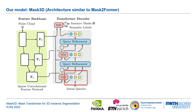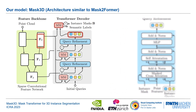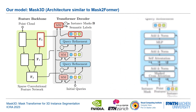To that end, the instance queries are iteratively refined by the transformer decoder, which allows the instance queries to cross-attend the point features extracted from the feature backbone and self-attend the other instance queries. This process is repeated for multiple iterations and feature scales, yielding the final set of refined instance queries.